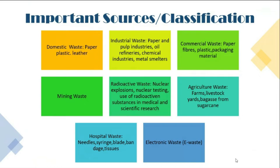Industrial waste comes from paper and pulp industries, oil refineries, chemical industries, and metal smelters. Commercial waste includes paper, fabrics, plastic, and packaging materials from places like hotels or restaurants. Mining activities also generate waste. Radioactive waste arises from nuclear explosions, nuclear testing, and the use of radioactive substances in medical and scientific research. Agricultural wastes include crop residues, livestock residues, and bagasse from sugarcane.